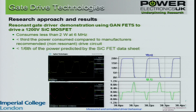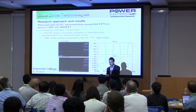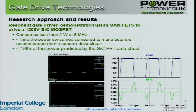A resonant gate drive has been developed, built and tested, and it consumed less than 2 watts at 6 megahertz switching - around a third of the power consumed compared to the manufacturer's recommended non-resonant drive circuit, and one sixth of the power loss predicted by published information. That shows it can work, and the resonant peaks involve transferring the energy from the gate to a storage component and back again.